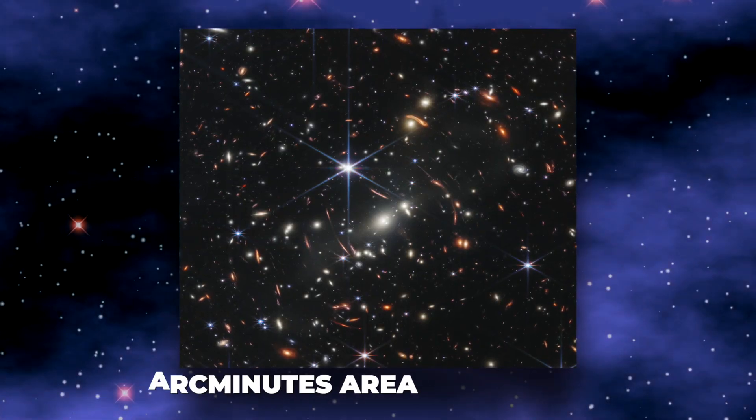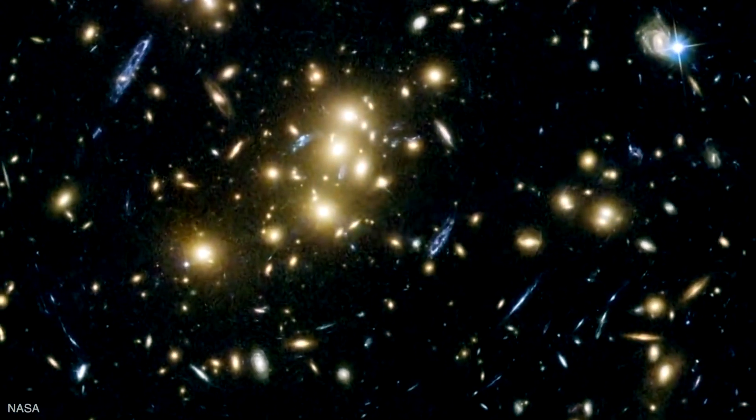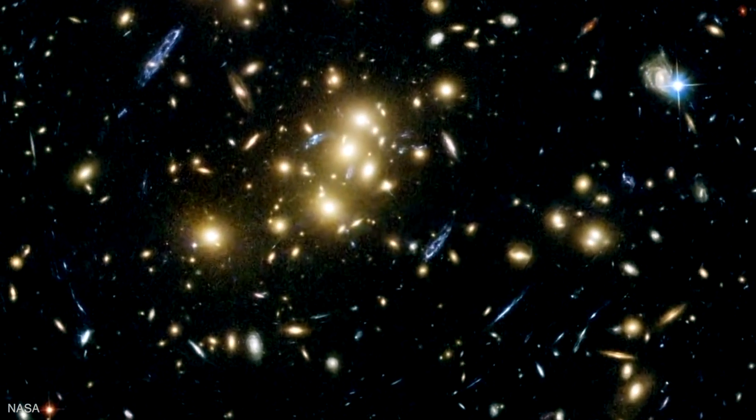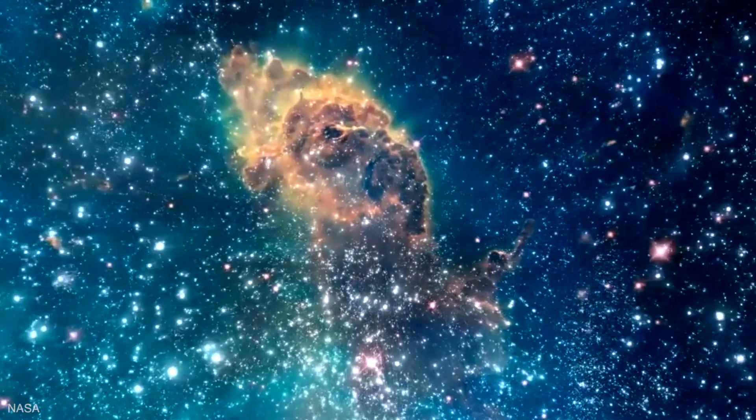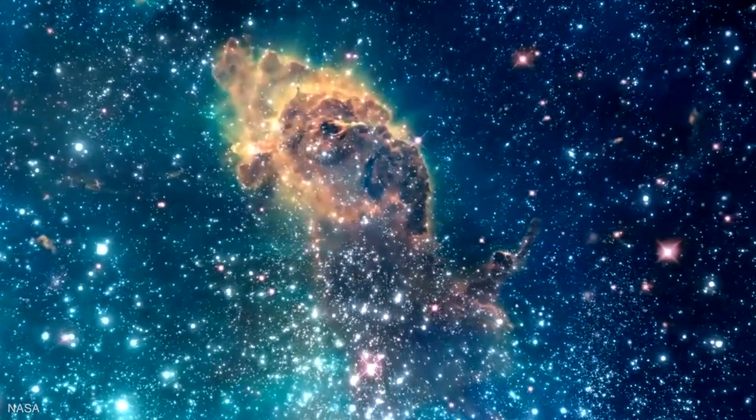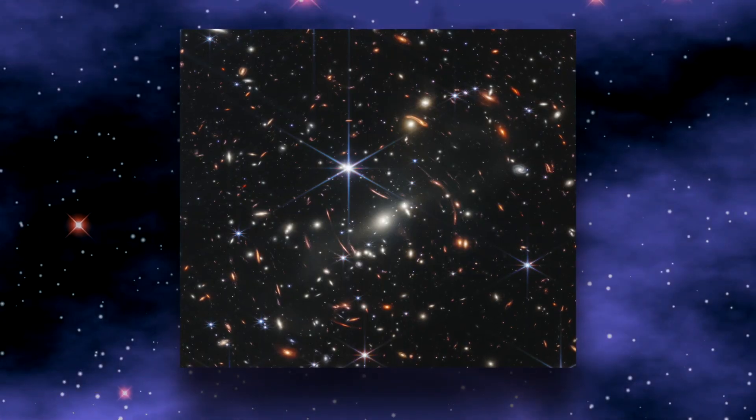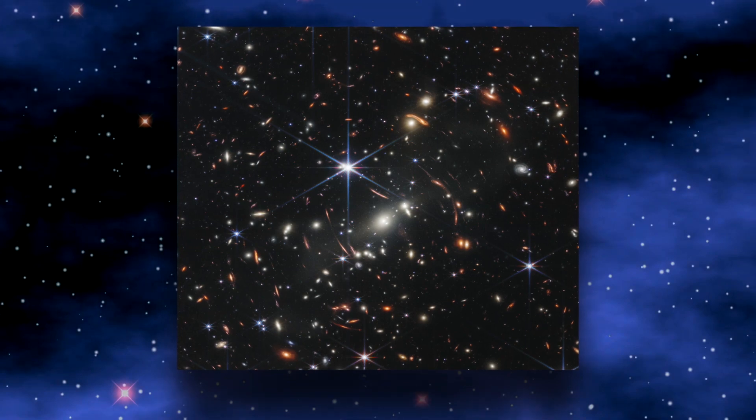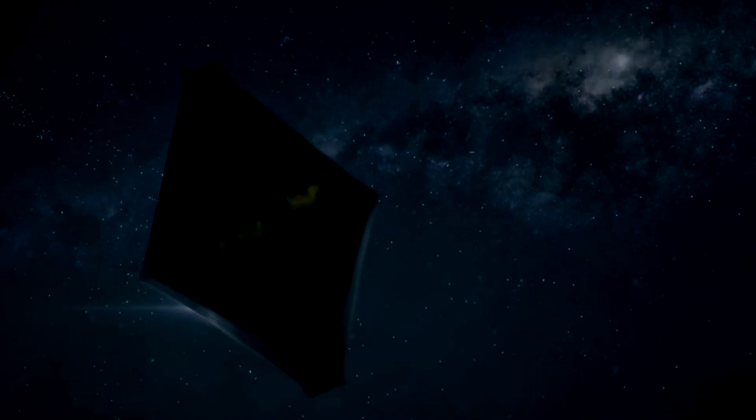SMACS 0723 covers a 2.4 arc minutes area, and one can clearly see galaxies upon galaxies in the photo. However, this massive cluster lies in the southern constellation Volans, or the flying fish, at a distance of 4.24 billion light-years. Hence, it is considered the most profound image taken by Webb. The galaxies lie behind the cluster and appear in the JWST as arcs of light around it.